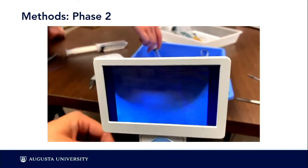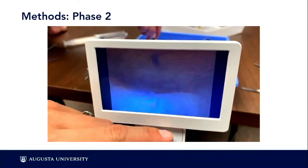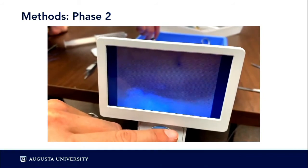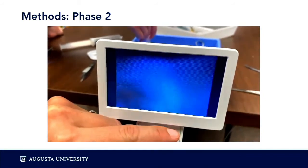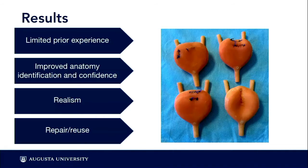You can see the anatomical structures including the trigone and the ureteral orifices. We also demonstrated the ureteral jets, showing there's no obstruction in the ureters. Most residents had little to no prior experience with this simulation or performing the procedure in real life, yet it is a required surgical milestone. This bladder model improved both their identification of bladder anatomy and their confidence in performing the procedure. Residents agreed the model was very realistic and did an excellent job demonstrating the anatomy.